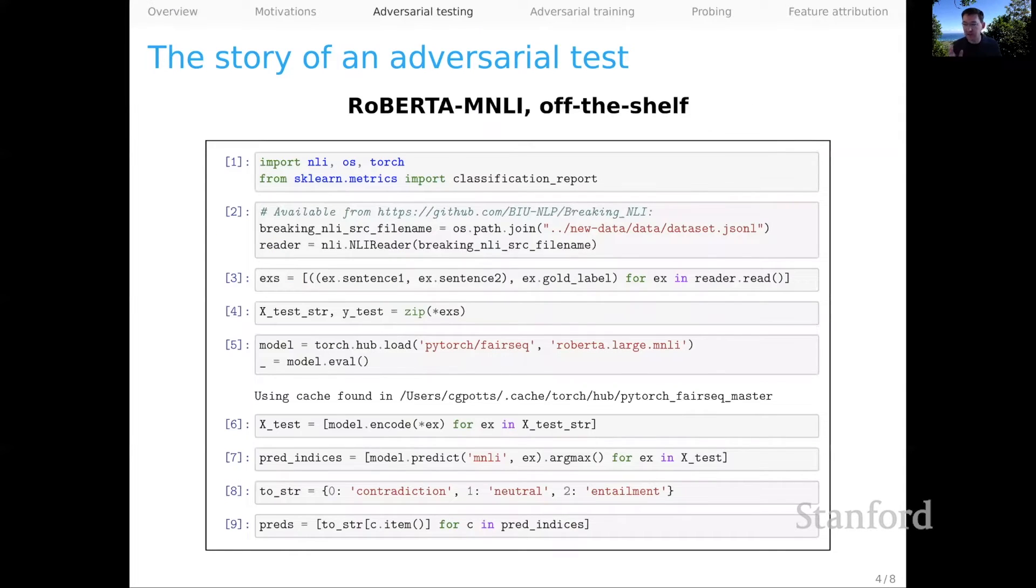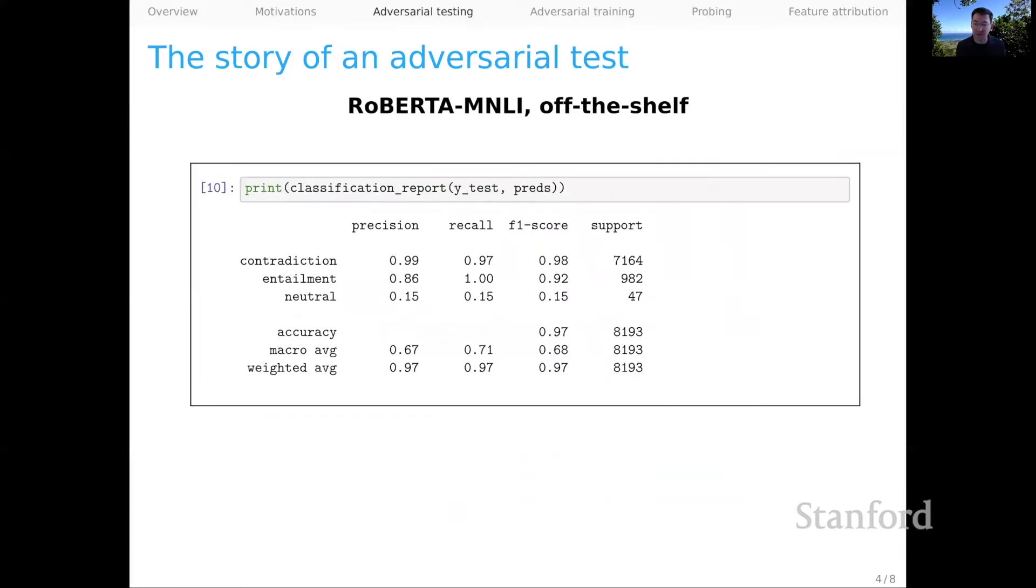And I told you that this was an interesting story. Here's the interesting twist. At this point in 2021, you can simply download Roberta MNLI, that's the Roberta parameters fine-tuned on the multi-NLI dataset, and run this adversarial test. And what you find is that that model does astoundingly well on the breaking NLI dataset. I would focus on these two F1 scores here for the two classes where we have a lot of support, contradiction and entailment. The numbers are above 90, as is the accuracy here, which is directly comparable to the numbers that Glockner et al. reported. An amazing accomplishment.